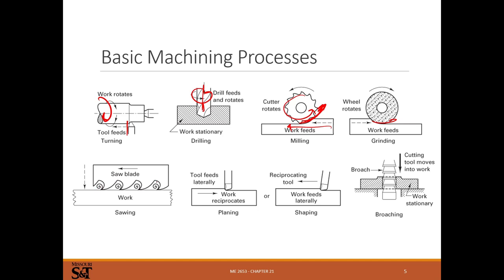Sawing uses a fixed or moving saw blade to remove material in small curly chips. Planing has the workpiece moving with the tool moving laterally to remove chips. Shaping has a reciprocating tool while the workpiece moves. Broaching uses a fixed part with a multi-tooth expanding cutting geometry that moves through the piece to cut it.